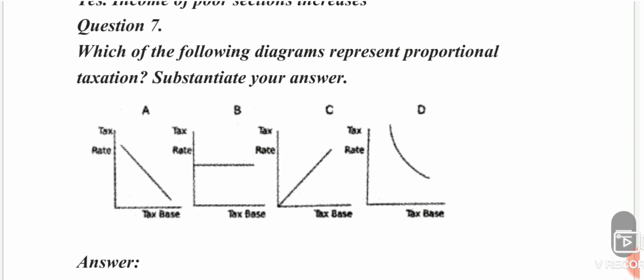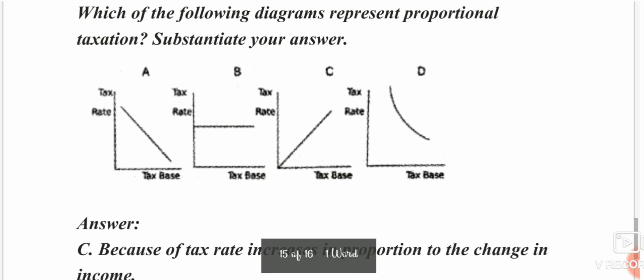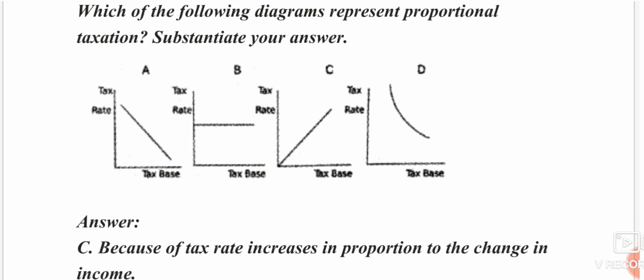Which of the following diagram represents proportional taxation? Proportional taxation is represented by the same diagram — option C. Tax rate increases in proportion to the change in income.